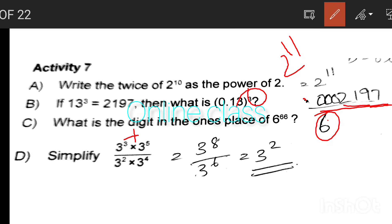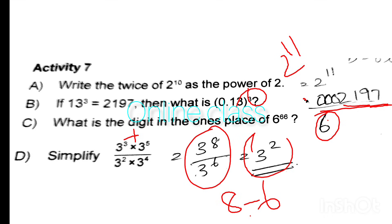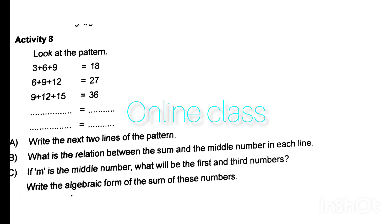For simplification: exponents give 2 plus 4, that is 3 raised to 6. Then 8 minus 6 equals 3 raised to 2, which equals 9.